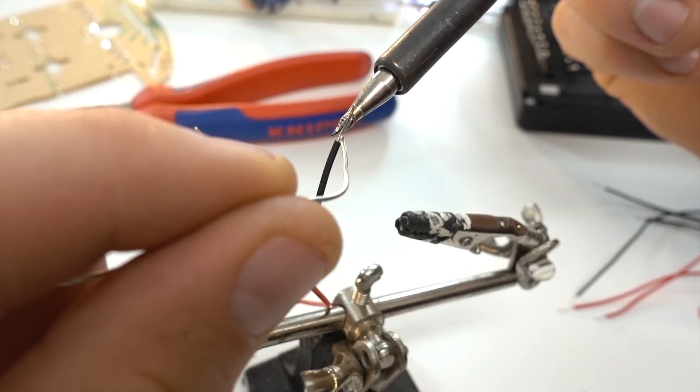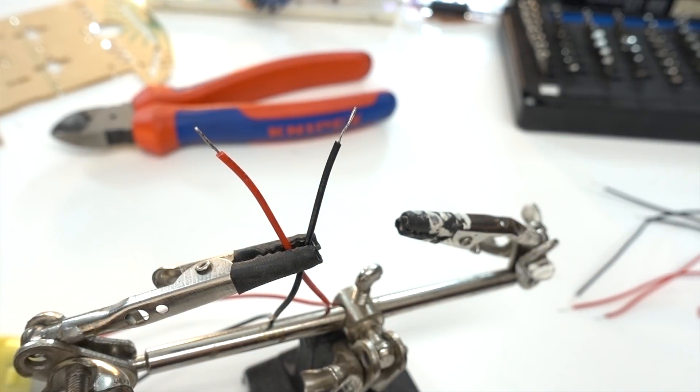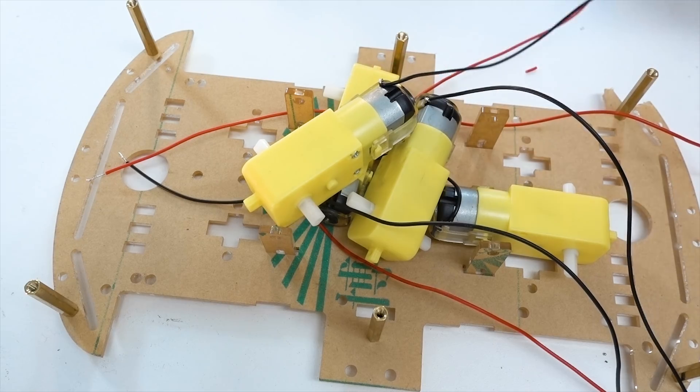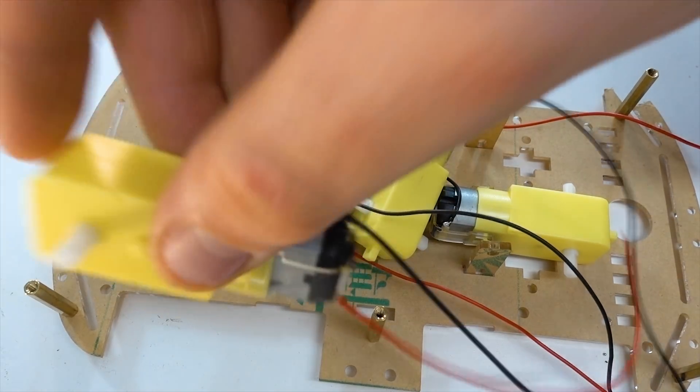With the wires all hooked up to the motors, it's just a matter of tinning the other end of those motor wires so that they're much easier to hook up to the motor driver. With all the leads soldered onto the motors, it's time to reassemble this little cart.